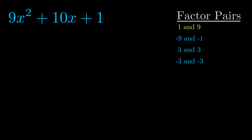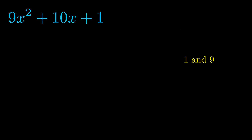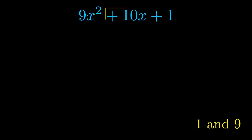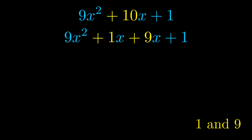And really this is the only factor pair that we need. Now once we have this factor pair, what we want to do is use it to split up the b value. Notice how I'm going to keep my first term and my last term completely unchanged. It is only this b term highlighted in yellow that gets expanded into this correct factor pair.